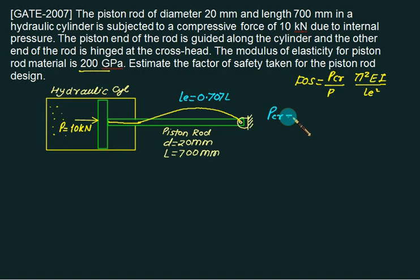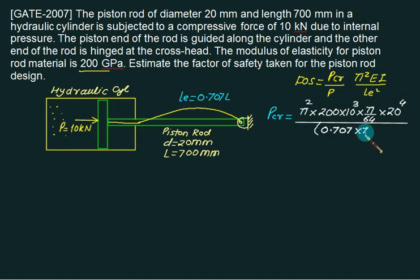We have Pcritical load. Pcritical load will become pi squared E. E is equals to 200 giga, which is 200 times 10 to the power 9. Then I, pi by 64, d to the power 4, 20 to the power 4, divided by LE. LE is 0.707L, which is 0.707 times 700, squared. In one stroke, you can calculate Pcritical.